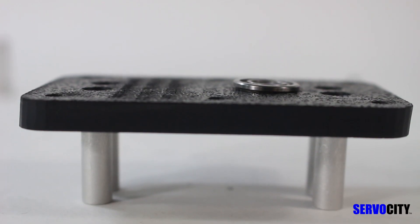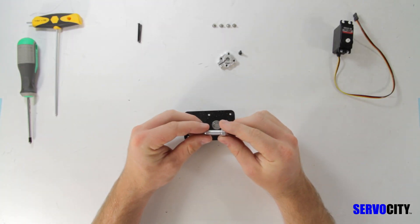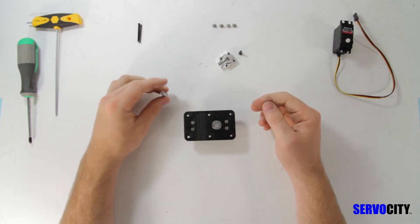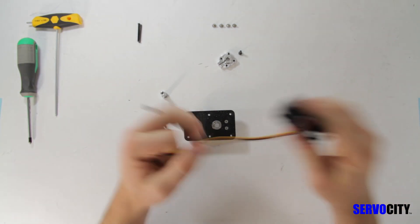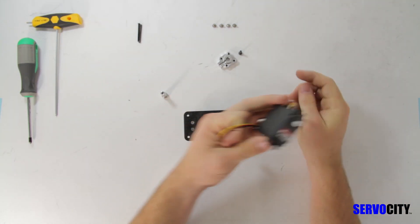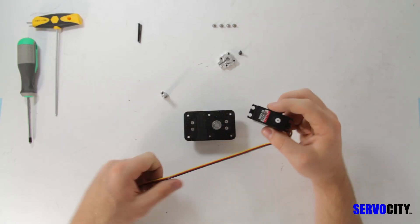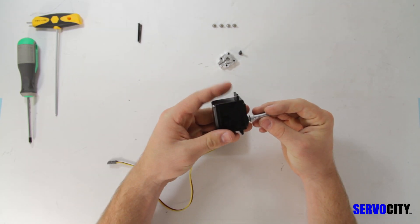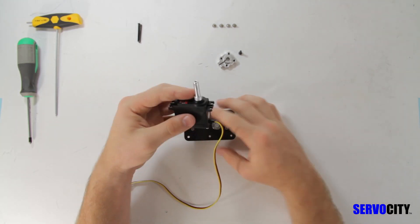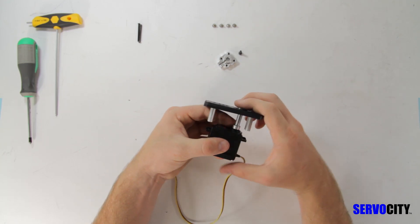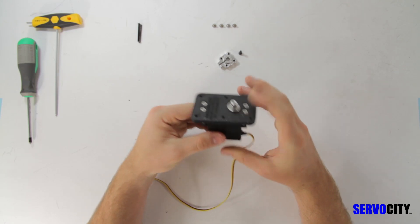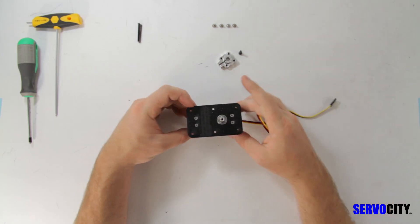Once you've attached the 4 aluminum standoffs, grab the servo shaft horn and your servo. For this video we are using the HS-425BB servo. Slide the shaft horn onto the output shaft of your servo and then fit the ABS plate over the top. Do take care not to knock the ball bearing out of place while you're doing this.